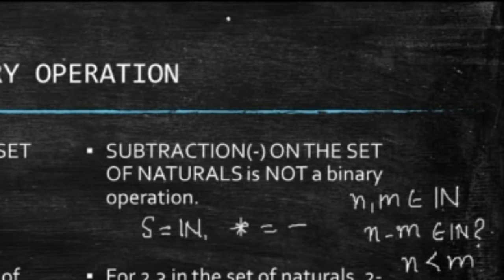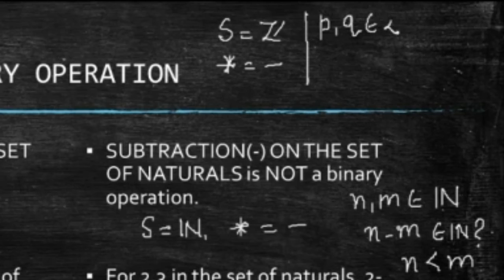Similarly, if I consider a set as, which is the set of integers, and the operation as subtraction only. In this case, the operation will become binary operation. Why? Because, let us say, we have P and Q in Z. Whenever there are two numbers, you can compare them. So, you have cases where P is greater than Q, where P is less than Q, and P is equal to Q. In every case, if P is greater than Q, I know, P minus Q will be a positive integer, and it will lie in the set of integers.